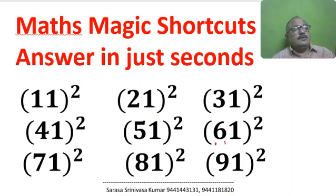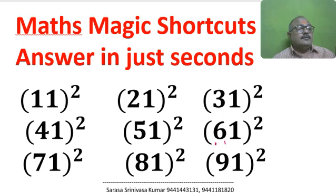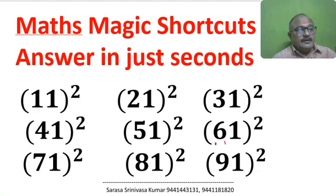Math magic shortcuts: answer in just seconds. 11 square, 21 square, 31 square, 41 square, 51 square, 61 square, 71 square, 81 square, 91 square.